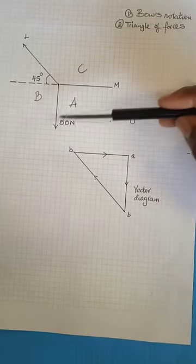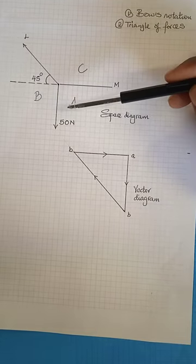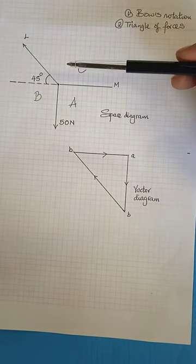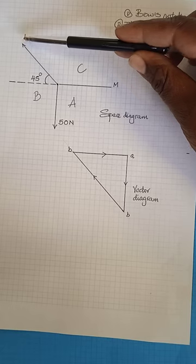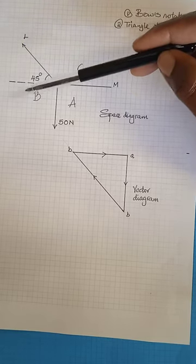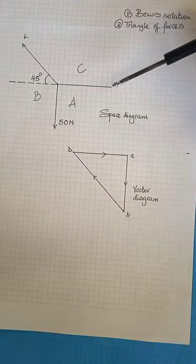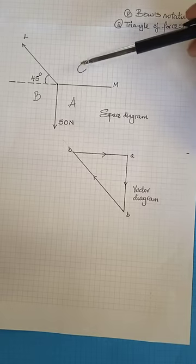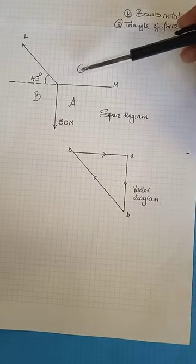So I'll be referring to the 50 Newton force as force AB. The L unknown force, I'll refer to it as force BC. And unknown M force, I'll refer to it as force CA.